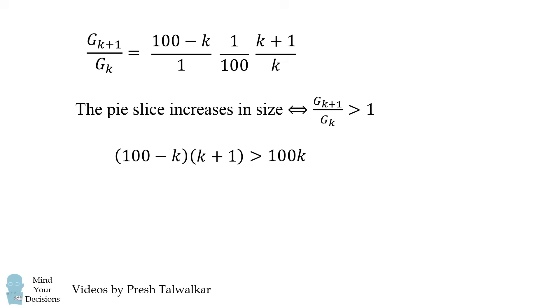we cross multiply. And then we simplify. We end up with the condition that the pie slice is increasing if and only if k squared plus k is less than 100.